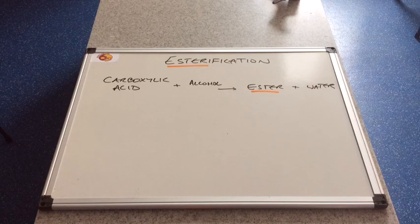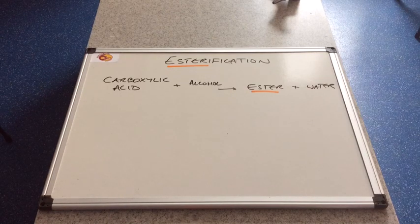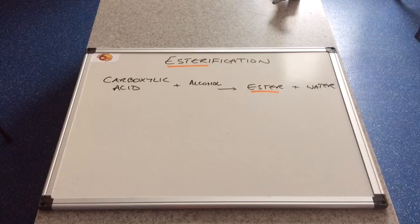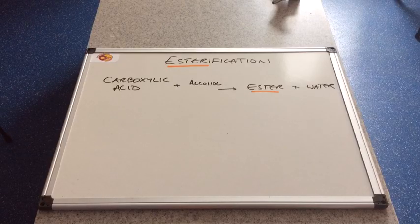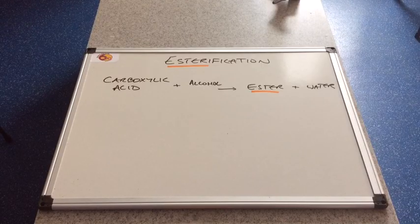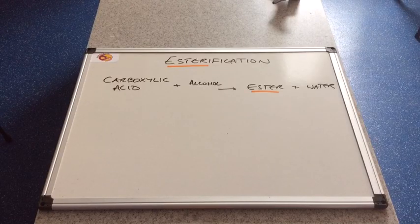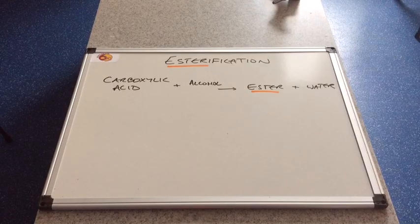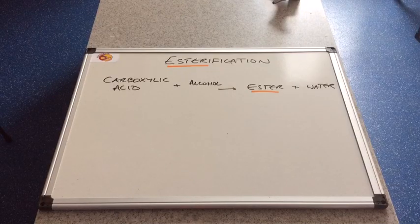This video is about another reaction of alcohols and it's known as esterification. If you have a look at the word equation there, you can see that the product underlined is an ester and therefore this reaction, because it produces esters, is known as esterification.